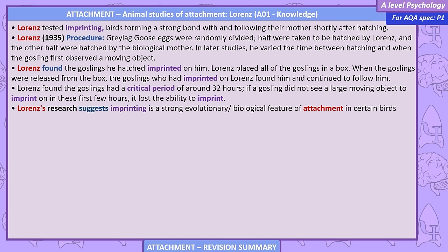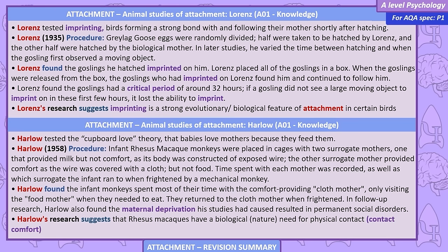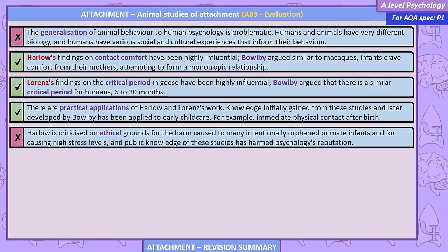Lorenz's research suggests imprinting is a strong evolutionary biological feature of attachment in certain birds. Harlow tested the cupboard love theory — that babies love mothers because they feed them. Harlow (1958): infant rhesus macaque monkeys were placed in cages with two surrogate mothers. One provided milk but not comfort, constructed of exposed wire. The other provided comfort with a cloth covering, but not food. Harlow found the infant monkeys spent most of their time with the comfort-providing cloth mother, only visiting the food mother when hungry, and returned to the cloth mother when frightened. Follow-up research found that the maternal deprivation caused resulted in permanent social disorders.